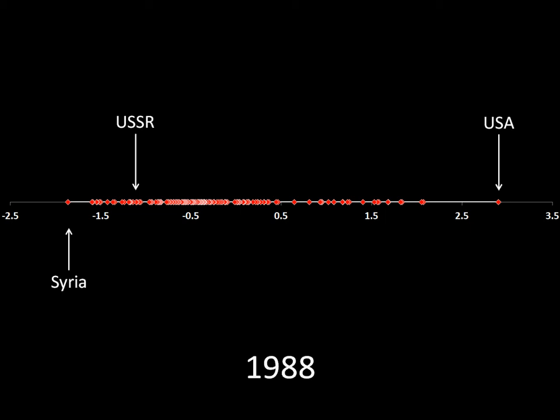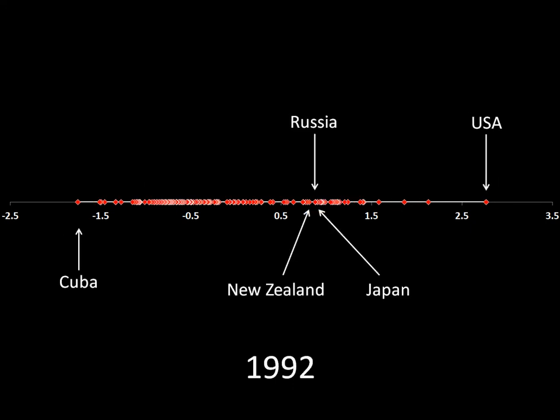If we jump four years later to 1992, at the end of the Cold War — the Soviet Union is no longer the Soviet Union, and its chief successor state is Russia — where does Russia lie on the spectrum? Suddenly Russia is actually very moderate. We see that Russia is falling in between New Zealand on its left and Japan on its right. We're seeing a shift to the right here toward the United States and toward the liberal order the United States tries to promote. And it's now Cuba in 1992 that's all the way on the left. Russia has moved toward the right, toward the United States, as the Cold War ended.